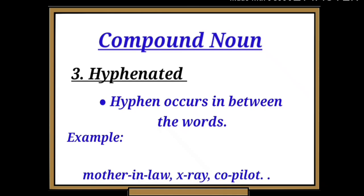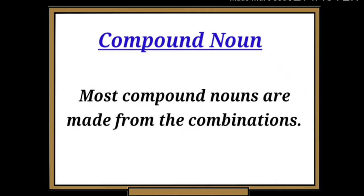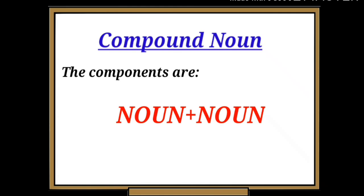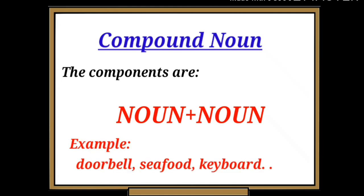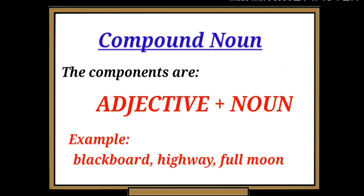Most compound nouns are made from combinations. The components are noun plus noun. For example: doorbell, seafood, keyboard, etc. See the word doorbell - door and bell both are nouns. The next components are adjective plus noun. For example: blackboard, highway, full moon, etc. See the word blackboard - black is an adjective and board is a noun.